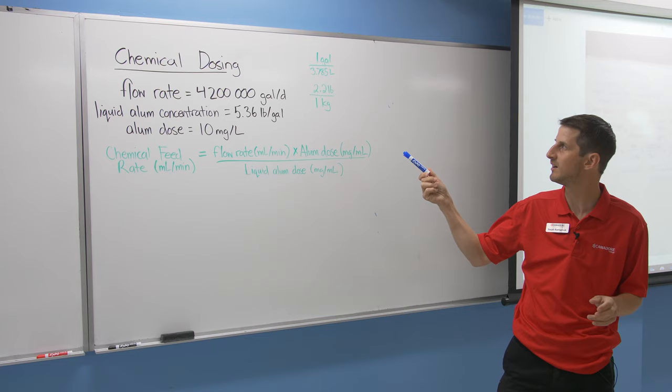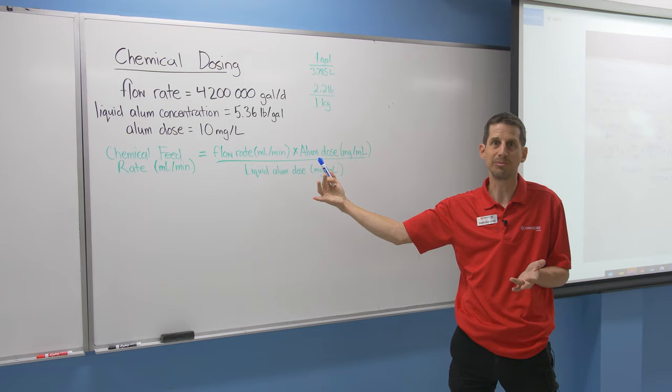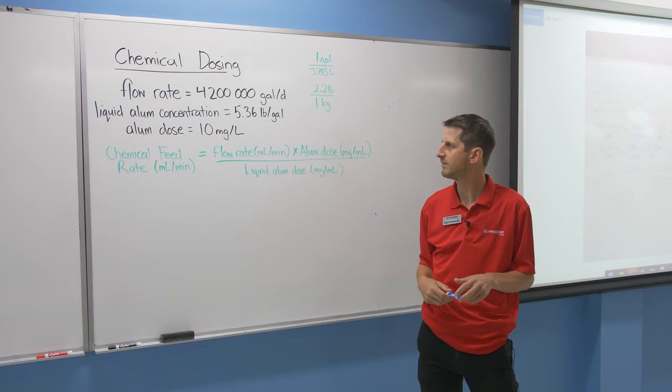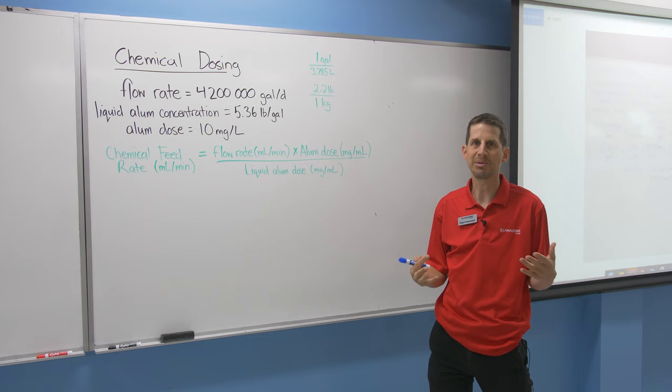In this problem, we've got a flow rate through the plant of 4.2 million gallons per day. We're dealing with coagulation, figuring out what dose to use. Our optimal dose is 10 milligrams per liter, and the liquid alum concentration we're going to use is 5.36 pounds per gallon.